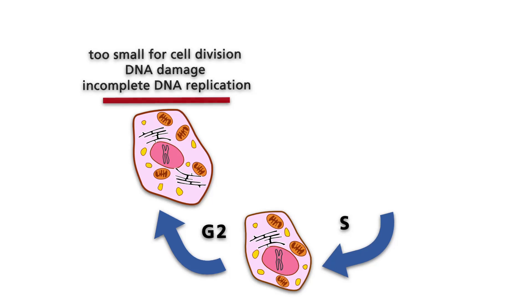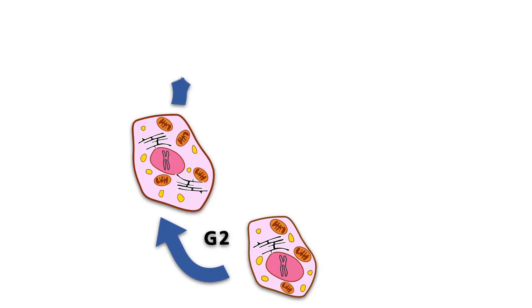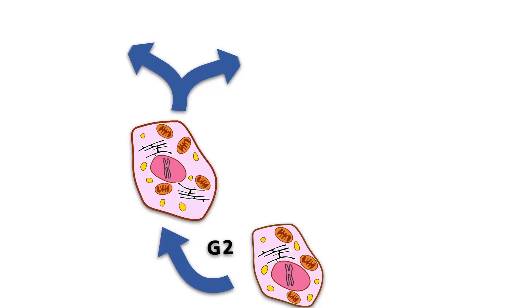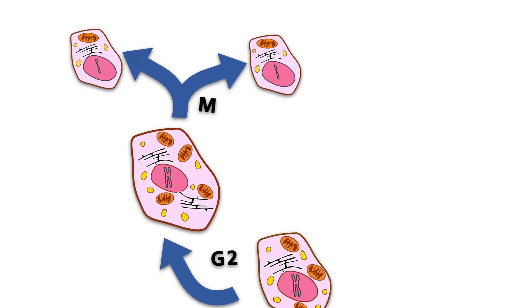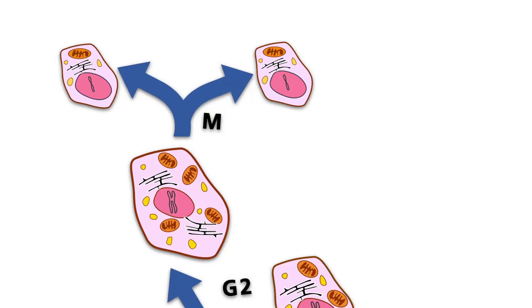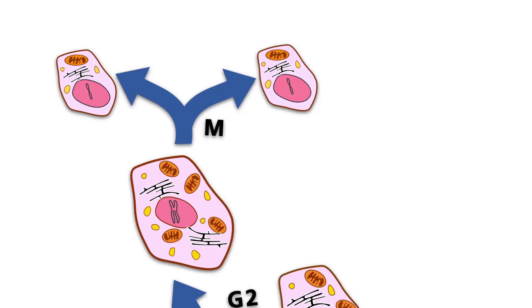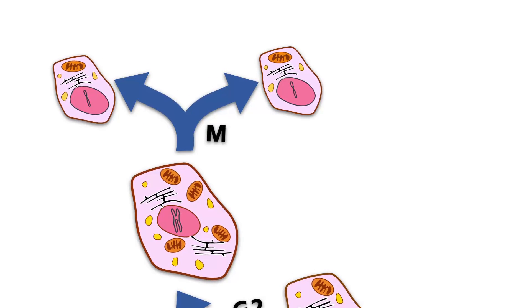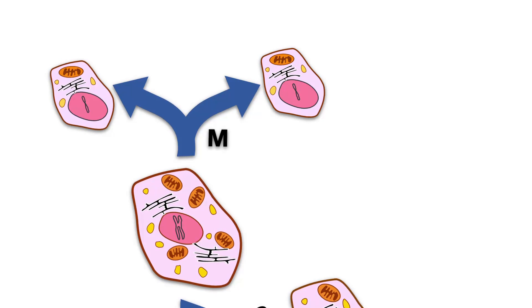The third significant checkpoint is located within the final phase of mitosis and is called MG1 checkpoint, or anaphase checkpoint. Here, the cell checks to ensure that all chromosomes are equally distributed on both daughter cells.